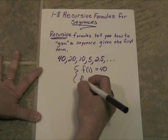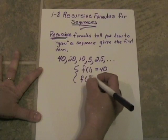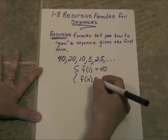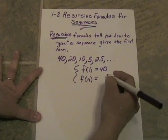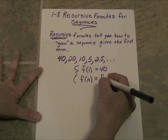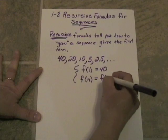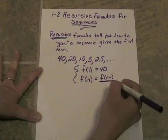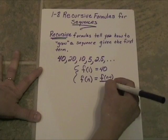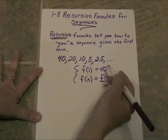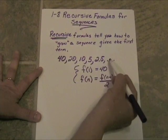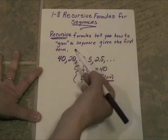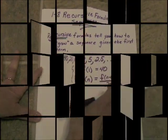And the f of the nth term is going to be equal to the f of n minus 1. You take that value, the preceding term, to get f of n and you just cut it in half. So here we have a description that will generate this sequence, but it has to start at 40 and work its way.